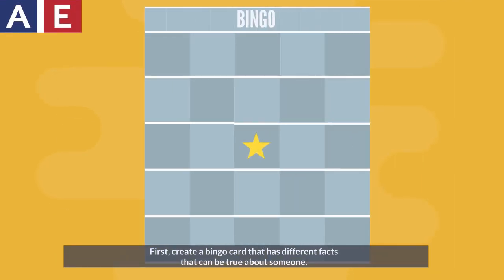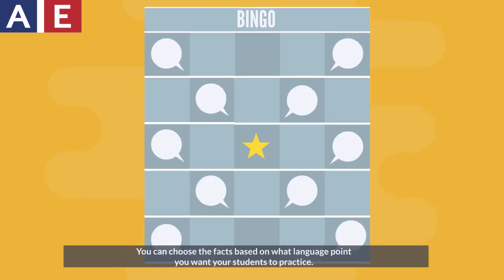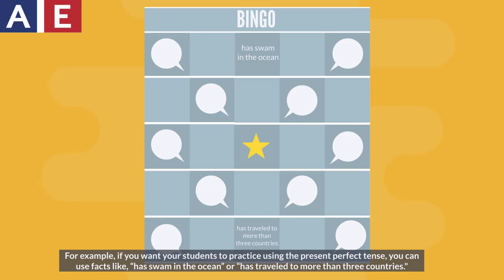First, create a bingo card that has different facts that can be true about someone. You can choose the facts based on what language point you want your students to practice. For example, if you want your students to practice using the present perfect tense, you can use facts like: has swam in the ocean, or has traveled to more than three countries.